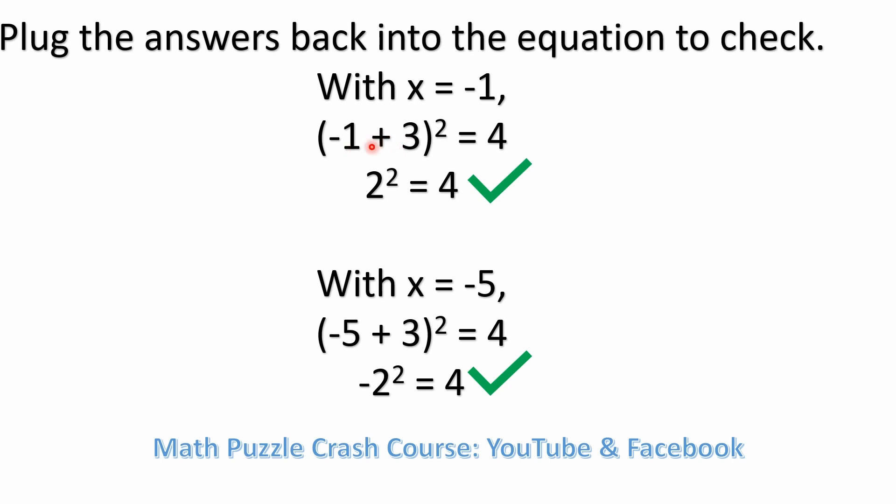Minus 1 plus 3 is the same thing as 3 minus 1, right? Which means that everything in the parentheses is equal to 2. Well, 2 squared is the same as 2 times 2, which is 4. So that checks out.